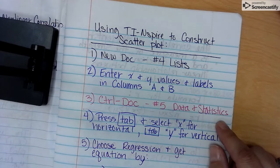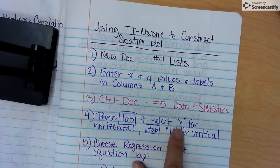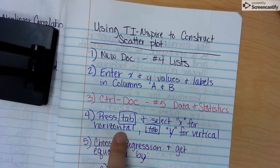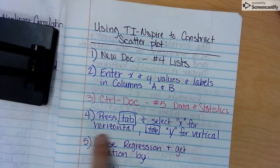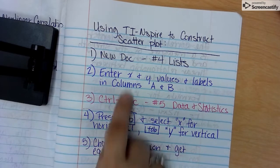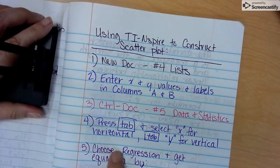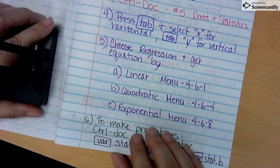Control Doc, then pick number 5 for Data and Statistics. Then if you push the Tab button on your calculator, you can select x for the horizontal, then push Tab again, pick select y for the up-and-down vertical.